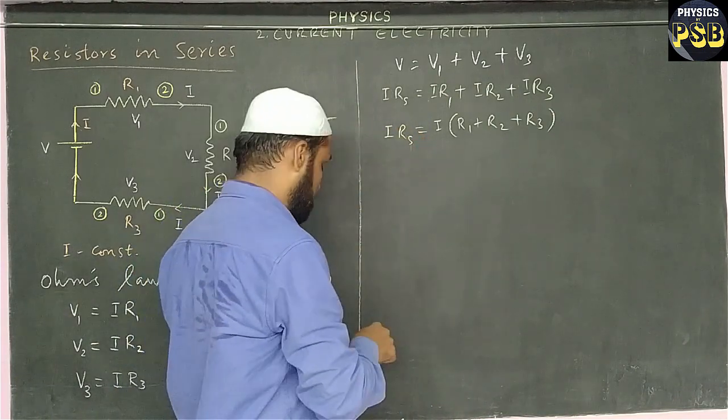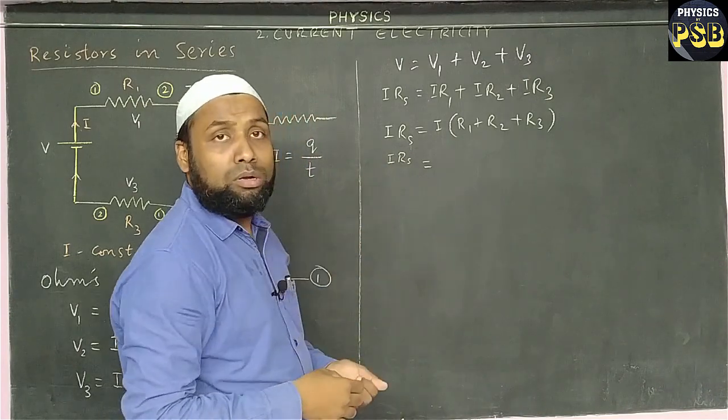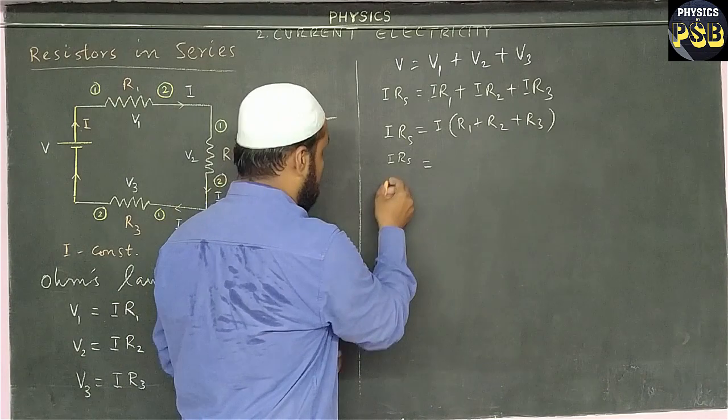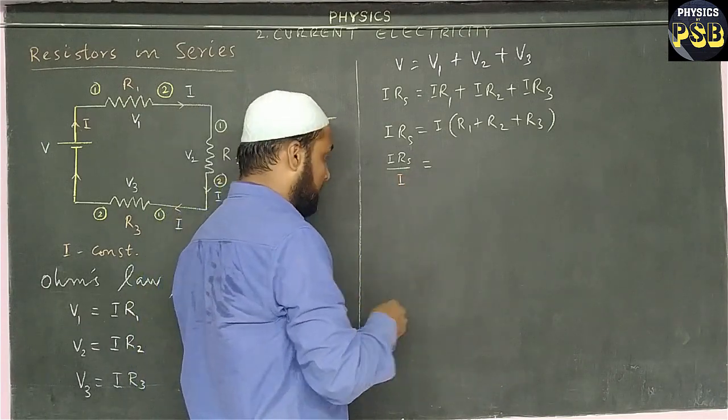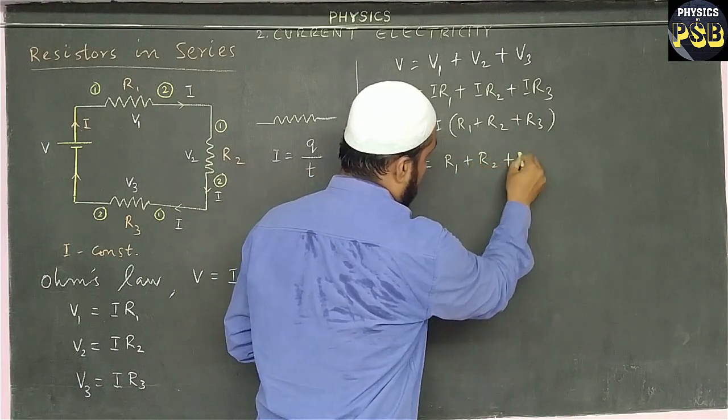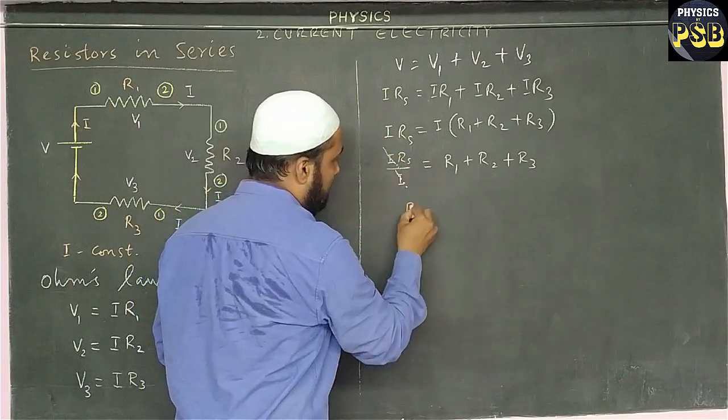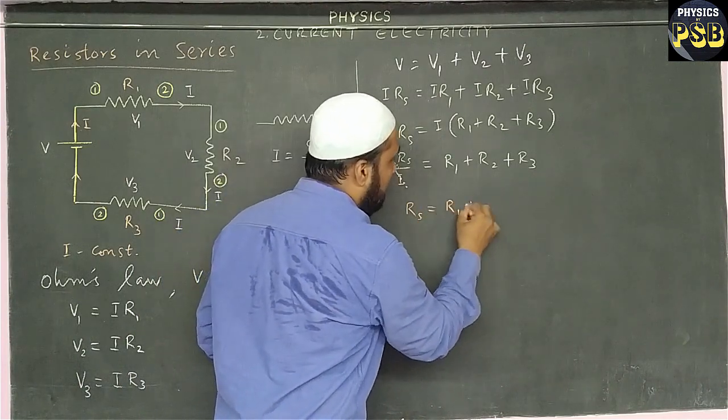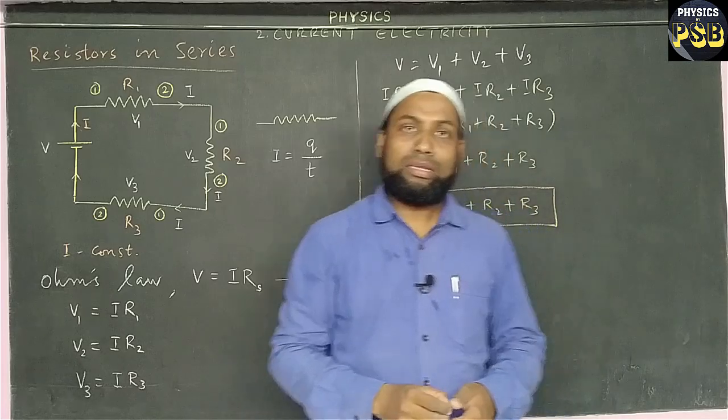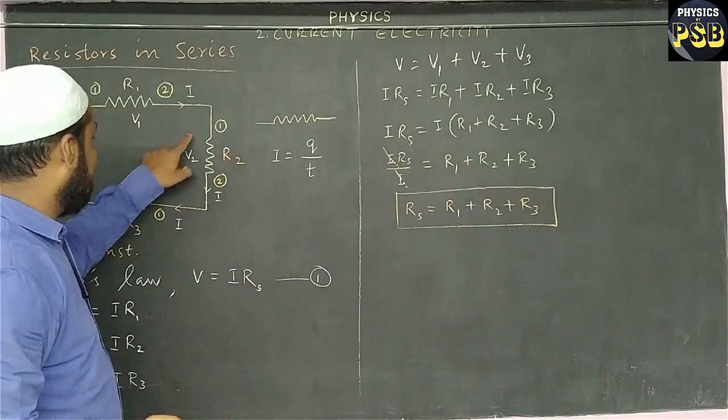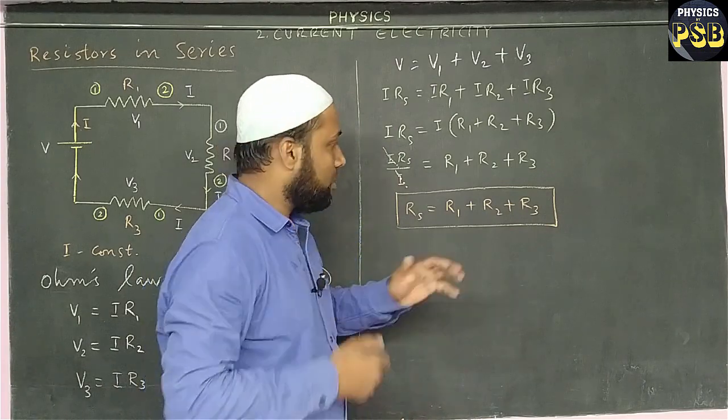Now in the next step, I will keep this as such. I bring I to the left-hand side. With this it is multiplying, here it will divide, and the remaining terms will remain as such. Now this I and I cancel. The next step is RS equals R1 plus R2 plus R3. This shows that resistance of resistors connected in series can be obtained by adding individual resistance of the resistor.